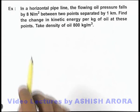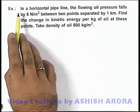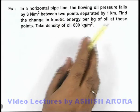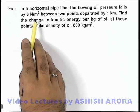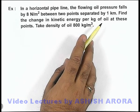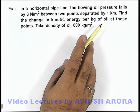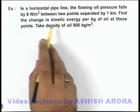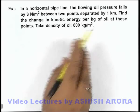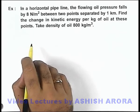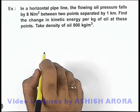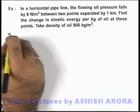In this example, we are given a horizontal pipeline where the flowing oil pressure falls by 8 newton per meter square between 2 points which are separated by 1 kilometer. We are required to find the change in kinetic energy per kilogram of oil at these points. We are also given that the density of oil is 800 kilogram per meter cube.